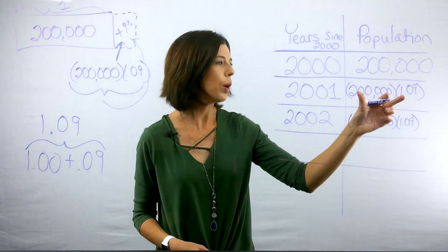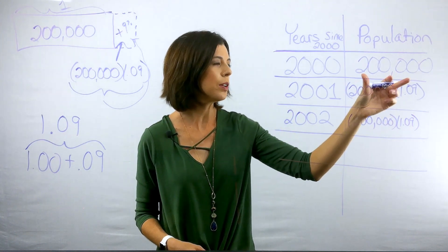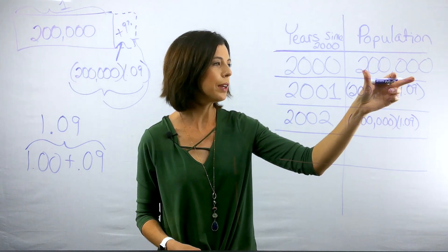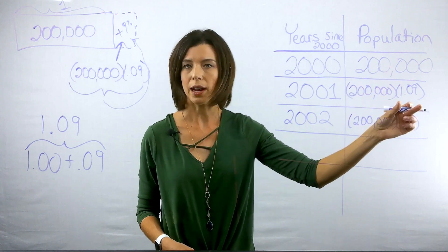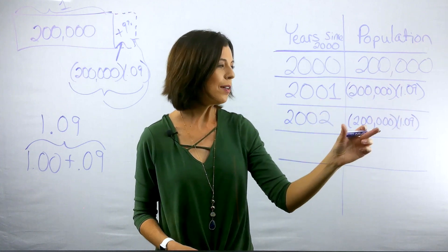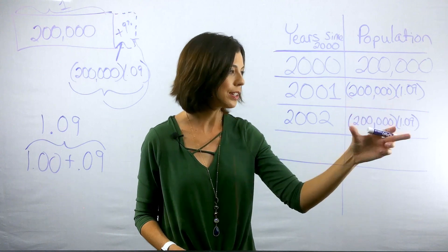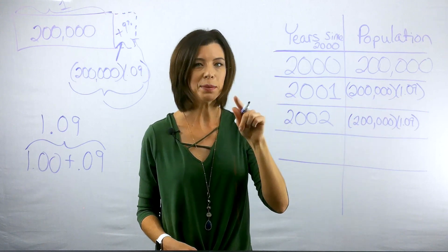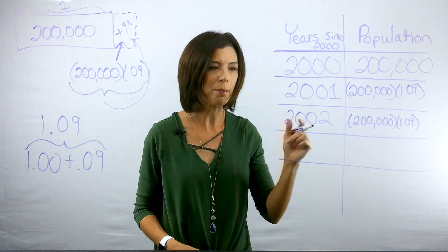Now you'll notice that I took what was from previous. So again, we're looking always at the previous year. So here was the previous year. I multiplied it times 1.09. Now I'm taking the previous year, which is this. And again, I need to multiply that number by 1.09. Interesting.